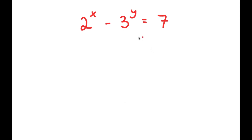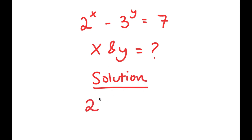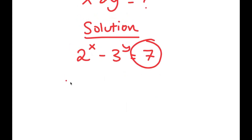In this problem, I have 2 to the power of x minus 3 to the power of y is equal to 7, and I'm going to find the values of x and y. For my solution, I'm going to rewrite 7 as 4 plus 3. So now I have 2 to the power of x minus 3 to the power of y is equal to 4 plus 3.